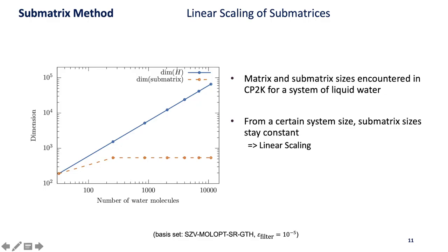Here's a quick proof that this is actually the case. We looked at systems of various size filled with water and we see that for an increasing number of water molecules the dimension of the Hamilton matrix increases linearly but the size of the submatrices is actually limited and from a certain point it doesn't grow any further.